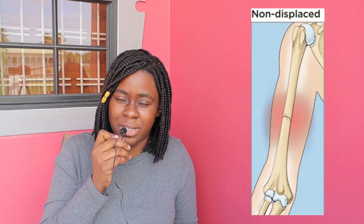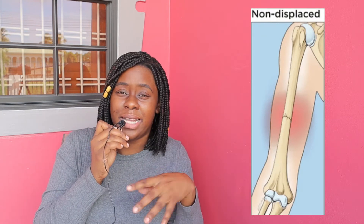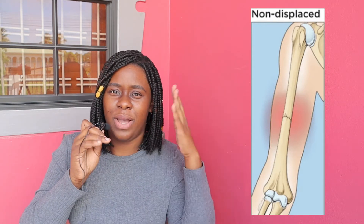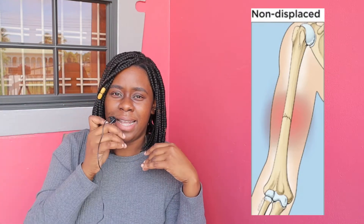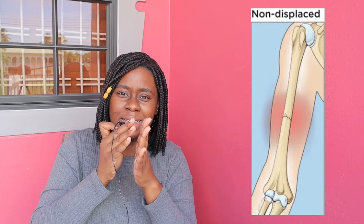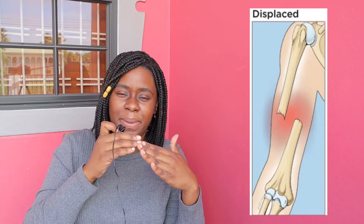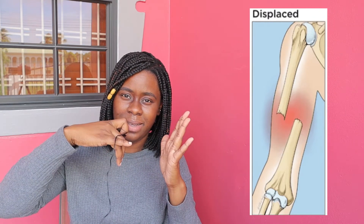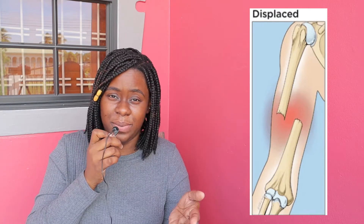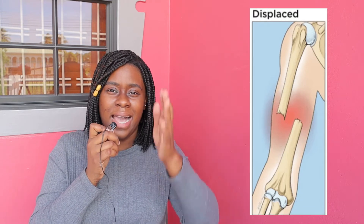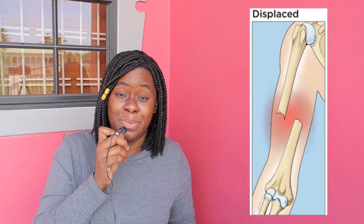A non-displaced fracture means that though the bone is broken, the pieces aren't separated or disjointed from each other — the bone is broken but still in line with the way it's supposed to be. With a displaced fracture, the bone is broken and no longer in line; it broke and shifted to one side, or pieces may be off in various directions, not lining up as they normally would.